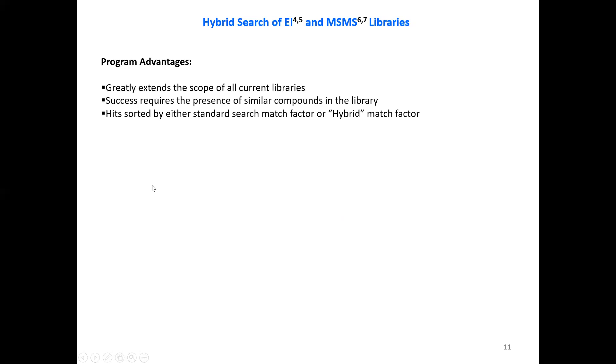So let's take an example to illustrate this. But first let's talk about the program advantages. The program greatly extends the scope of all current libraries. The success requires the presence of similar compounds in the library. Hits are sorted by either standard search match factor and then also the hybrid match factor. You can resort the results automatically just by clicking on the top of the column. And the delta mass reflects the modification of the model molecule.